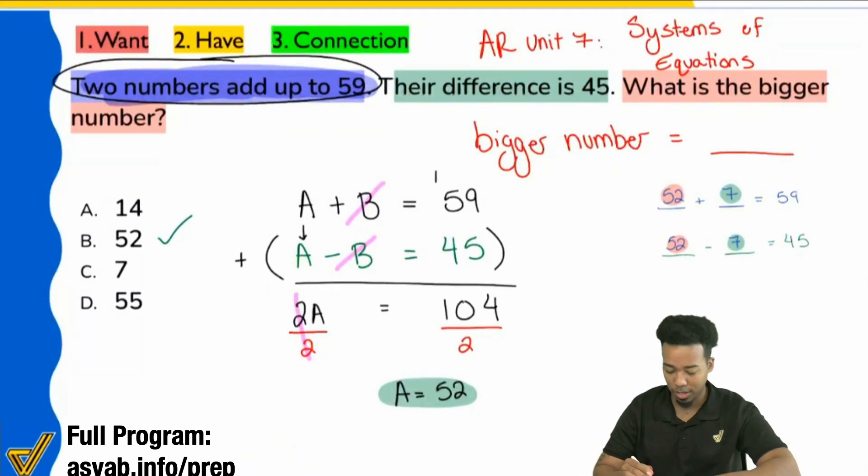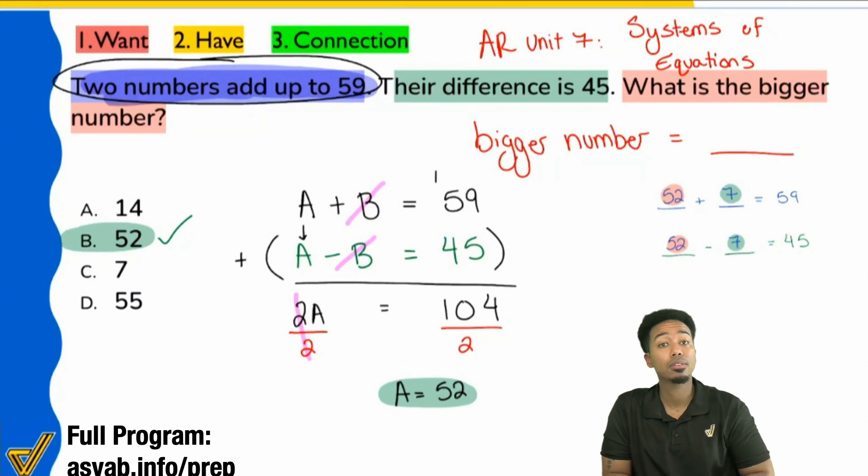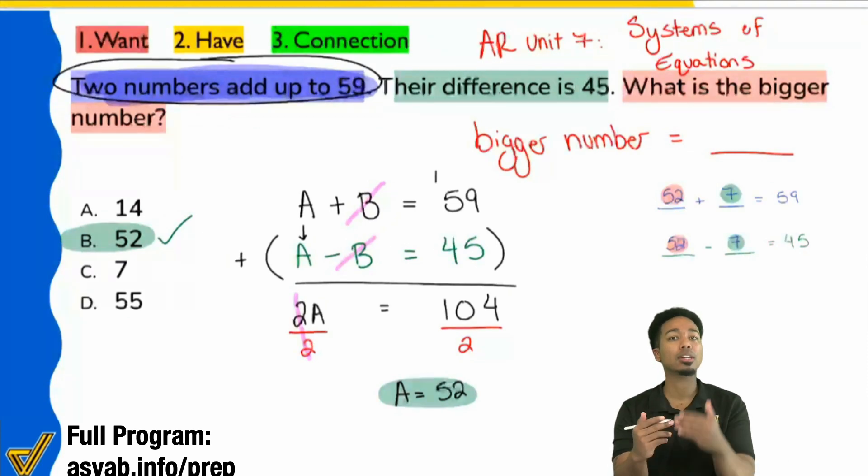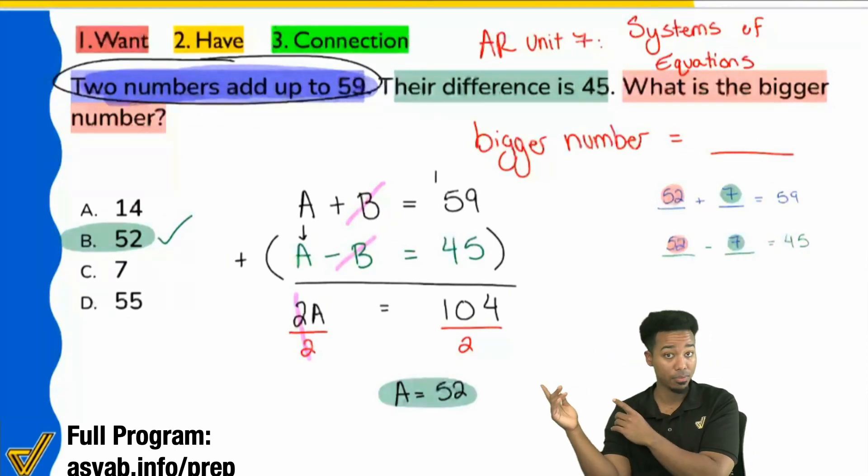Yeah. And we are done. The answer is B, 52. Now I saw a question there saying, hey, are we always using the smaller one? Are we always trying to find the bigger number? No. They can give you any information any which way, my party people, any which way. It's really up to you to understand how to set up the equations from the words they give you.